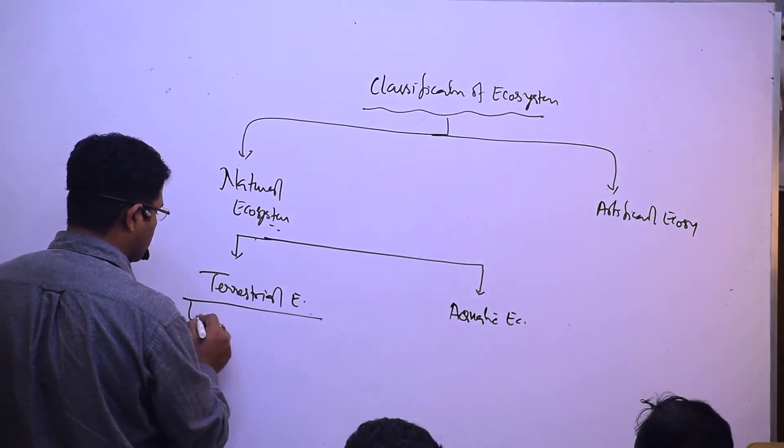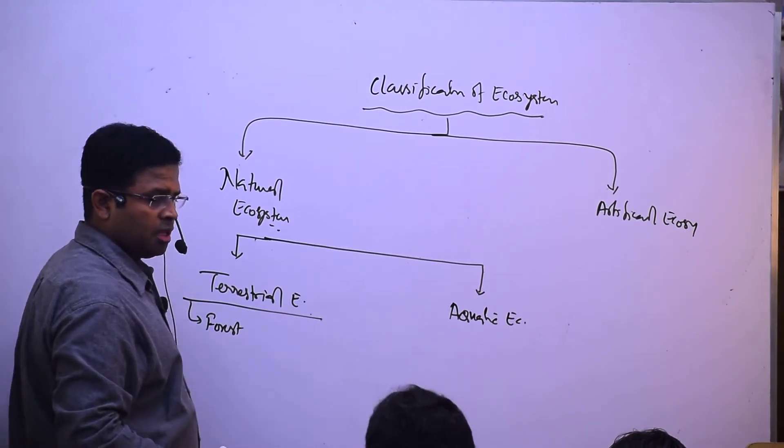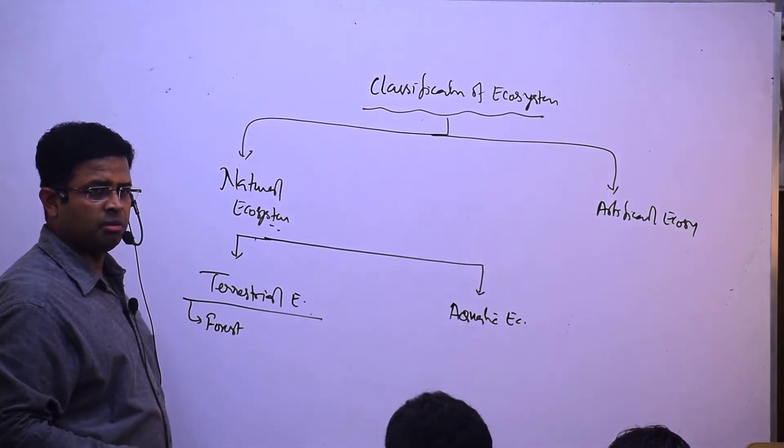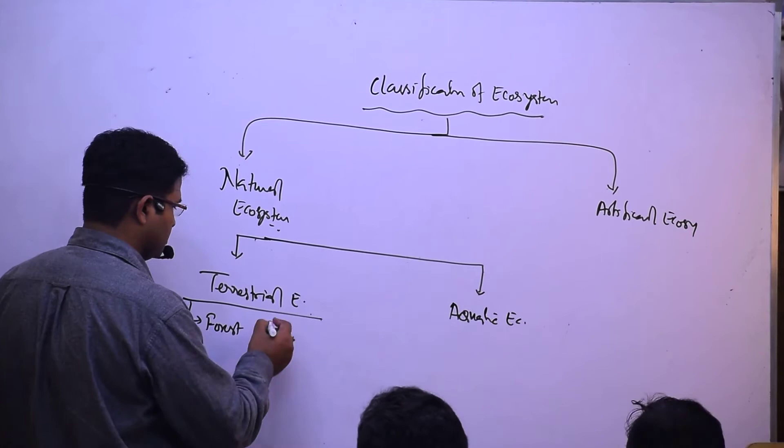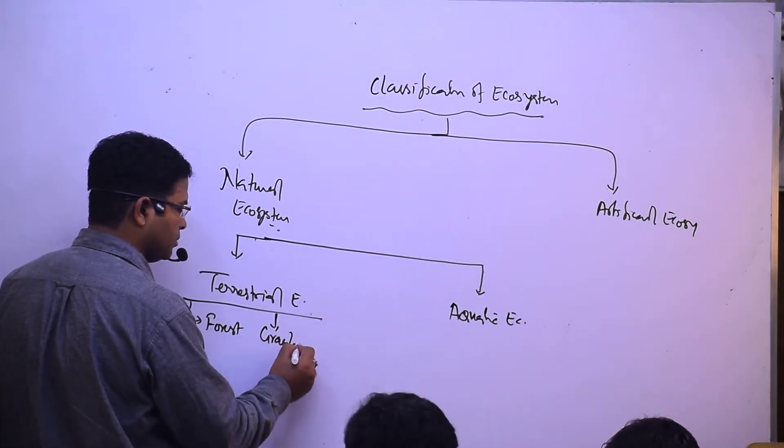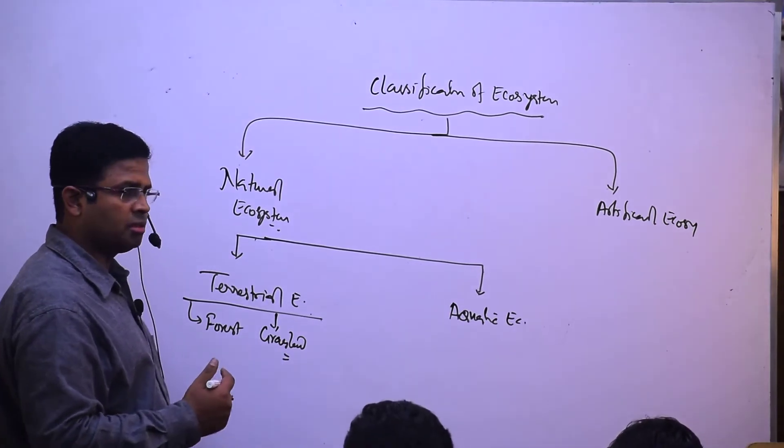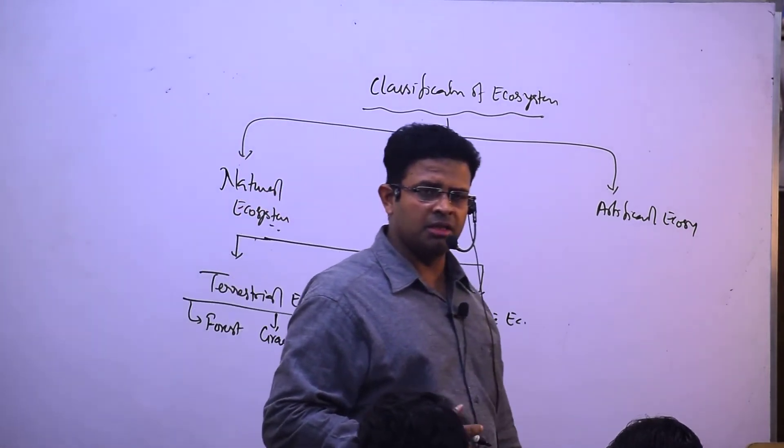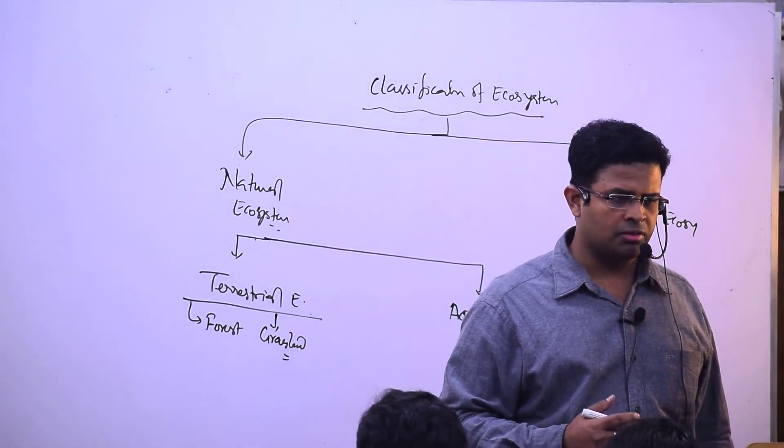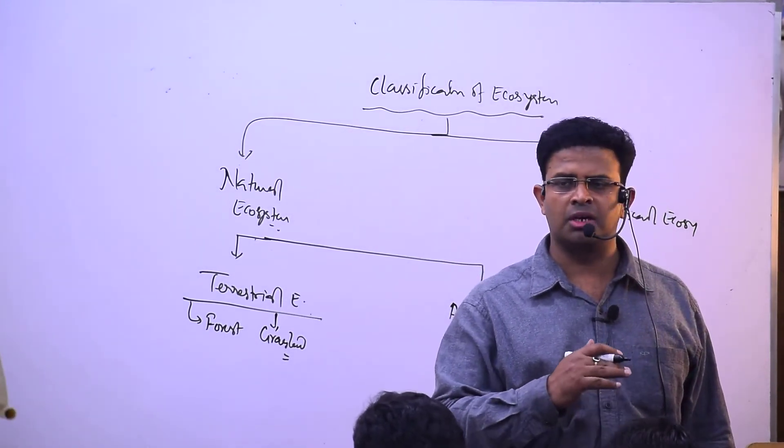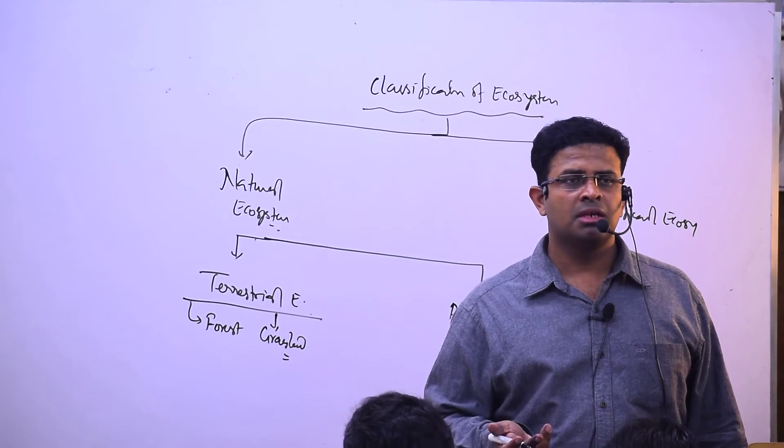In terrestrial ecosystem we will see forest - evergreen forest, tropical forest, semi-evergreen forest, tropical evergreen forest, tropical semi, tropical moist desert, tropical dry desert - different kinds of forest. Then grassland. Forest will be there if we are getting rainfall till 80 or 60 centimeters. You can see forest and some trees. After that, at 60, 70, 50 centimeters, trees will convert into grasses.